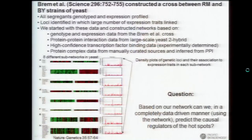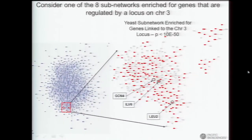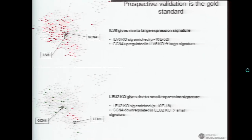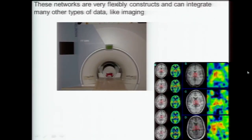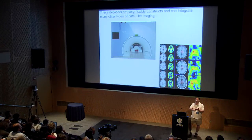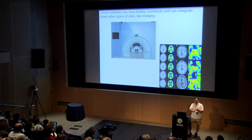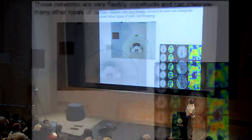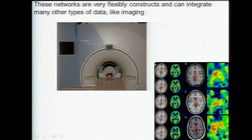I'm going to jump over the yeast example — published in Nature a couple years ago — and spend a little time on a broader point. What I've been talking about is DNA variation and molecular phenotypes like metabolites, RNA sequencing, or protein. But we can also integrate into those same networks imaging-based data.